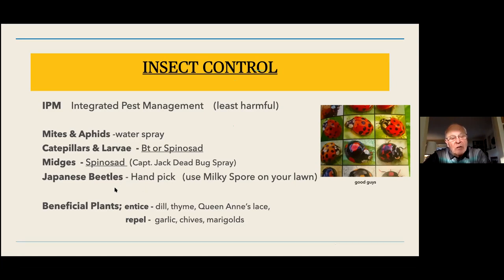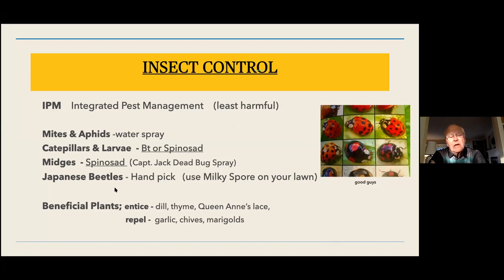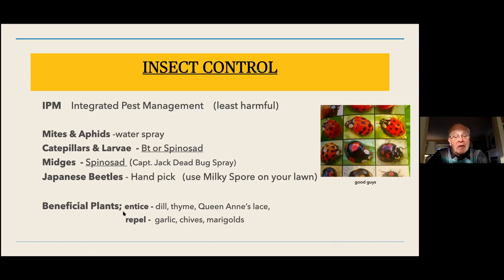Another thing for insect control is companion plants. A lot of gardeners in the societies are into planting companion plants for roses — they plant dill, thyme, and queen's lace in the garden. I have dill in the yard and I also put some garlic in the yard; that repels insects with its smell. Chives and marigolds are also good companion plants. There's a whole big category of plants that will entice or repel insects — I behoove you to look that up and find the ones you want to grow amongst your roses.